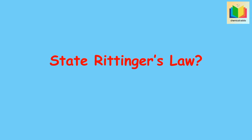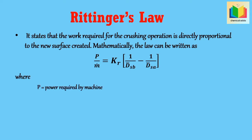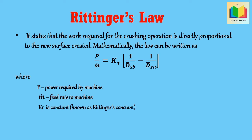State Rittinger's law. Rittinger's law states that the work required for the crushing operation is directly proportional to the new surface created. Mathematically the law can be written as: P/ṁ = Kr × (1/Dsb − 1/Dsa), where P is the power required by the machine, ṁ is the feed rate to the machine, Kr is a constant known as Rittinger's constant, and Dsb and Dsa are the volume surface mean diameters of the feed and product.